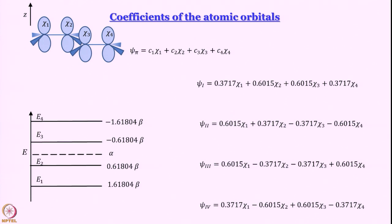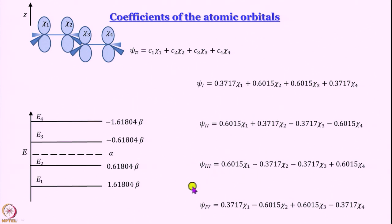These are the coefficients that come out, and once you look at them you see a nice symmetry that was there in the secular determinant reflected here as well. The magnitude of each coefficient is just 0.3717 or 0.6015, and they keep changing places — you always have two 0.3717s and two 0.6015s as coefficients no matter which molecular orbital you take. It is just that in the first one all coefficients have positive sign, while in the other three, two have positive sign and two have negative sign.